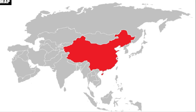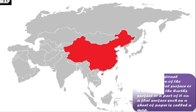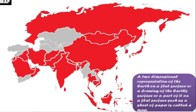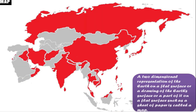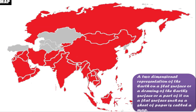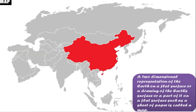A map is a two-dimensional, or 2D, representation of the earth on a flat surface. A 2D representation has length and breadth but not depth. So a map is a drawing of the earth's surface, or a part of it, on a flat surface. We can draw the entire earth's surface or just a part of it.